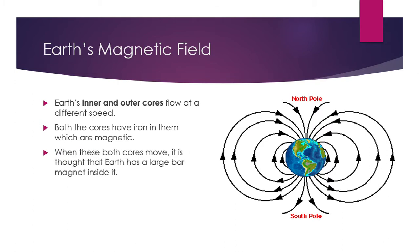When these both cores move, it is thought that the Earth has a large bar magnet inside it. These circumstances make our Earth act like a magnet.